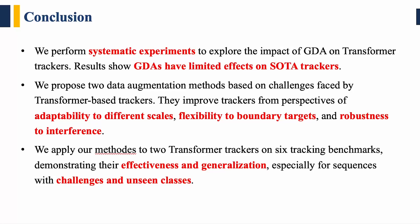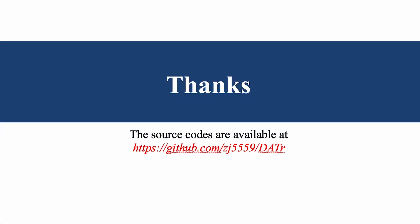Here are some conclusions of our work. First, we performed systematic experiments to explore the impact of general data augmentation on transformer trackers, and results show that GDA has limited effects on SOTA trackers. Second, we proposed two data augmentation methods based on challenges faced by transformer trackers, improving trackers from the perspectives of adaptability to different scales, flexibility to boundary targets, and robustness to interference. We applied our methods to two transformer trackers on six tracking benchmarks, demonstrating their effectiveness and generalization, especially for sequences with challenges and unseen classes. You can find our code and results at the provided link.